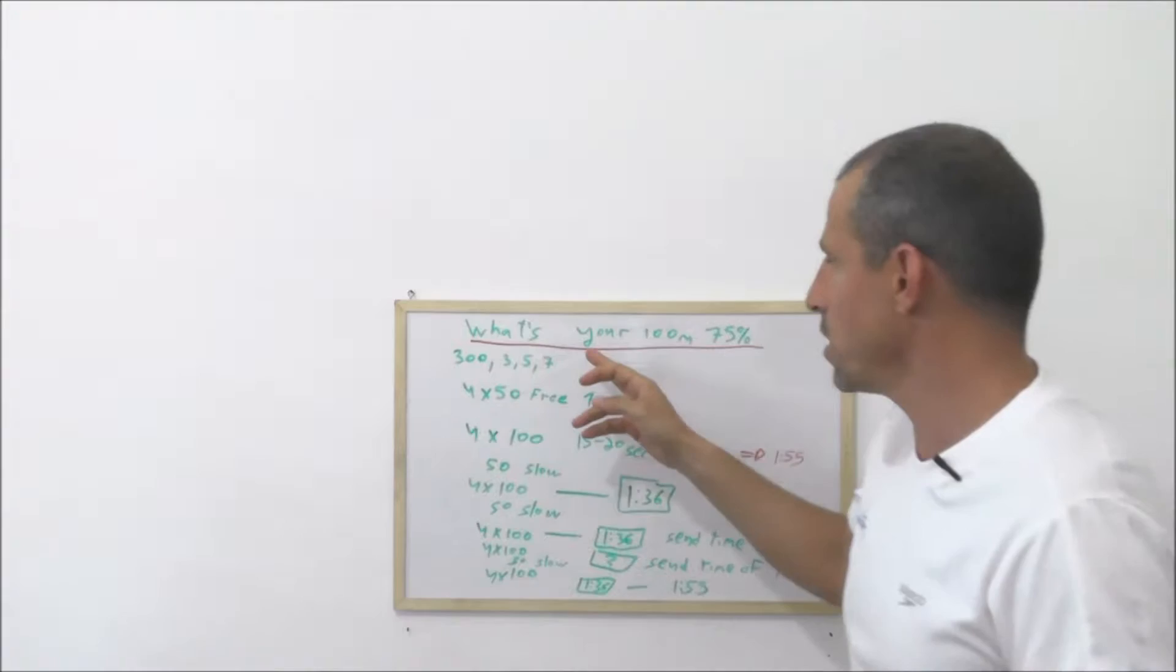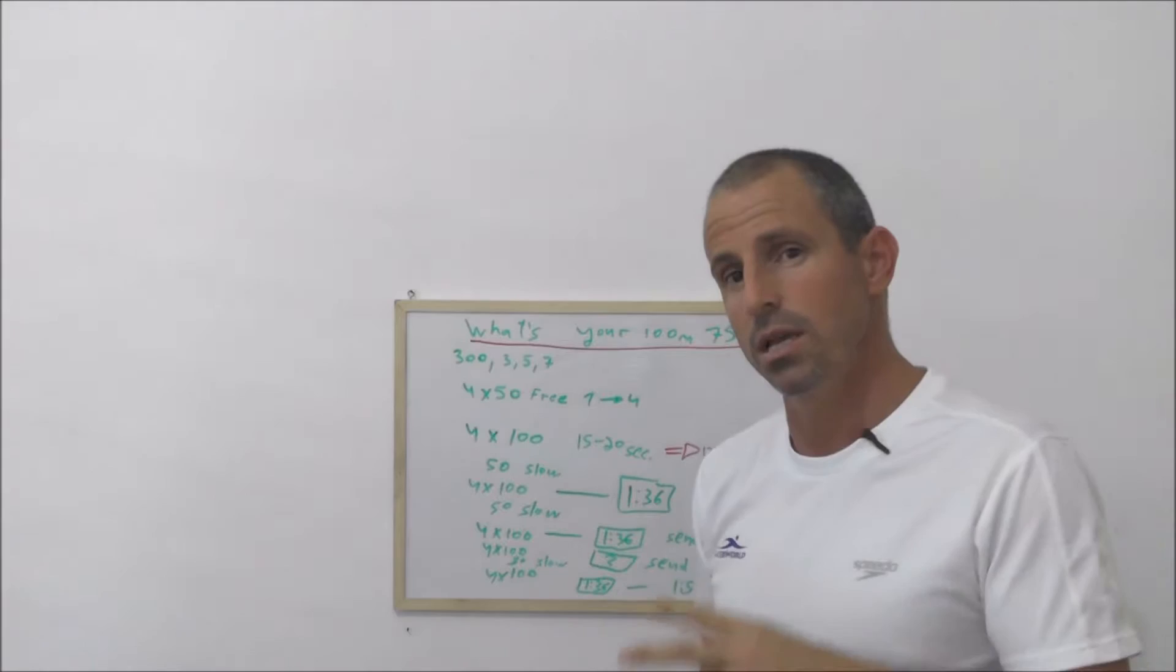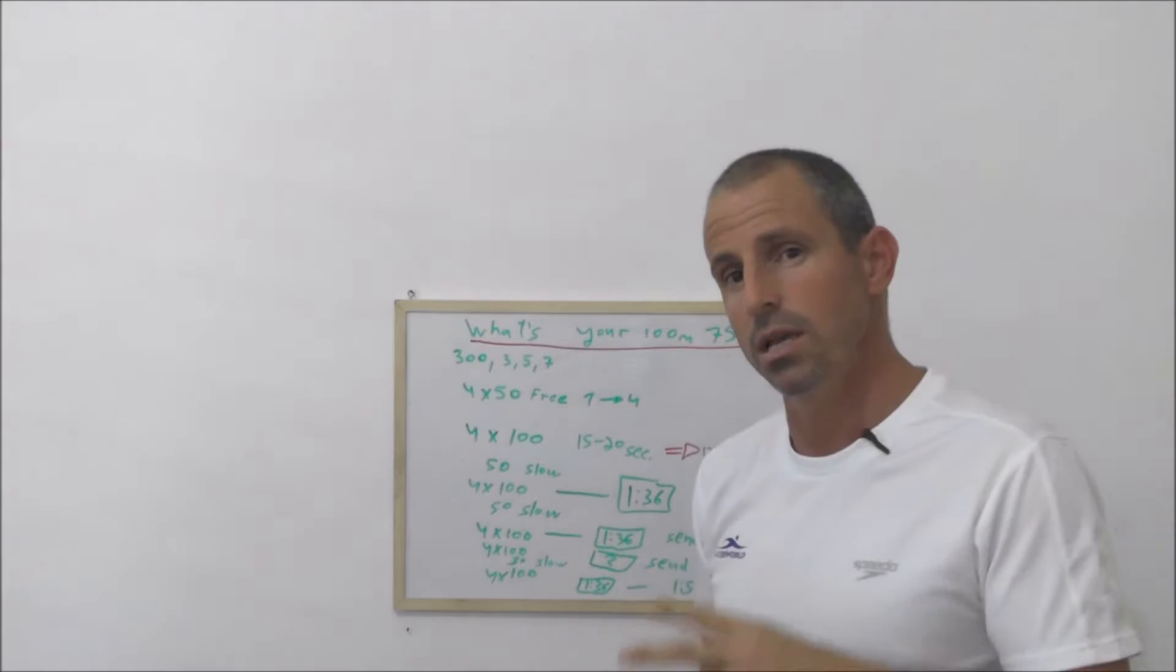The first exercise is swimming 300 and breathing a little bit of hypoxy every three strokes, five strokes, and seven strokes. The flip turn is like two strokes so every lap you're going to continue from the start.